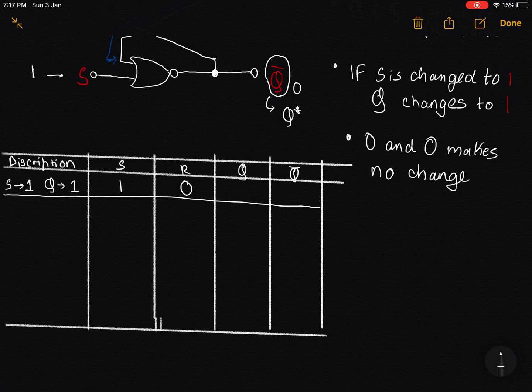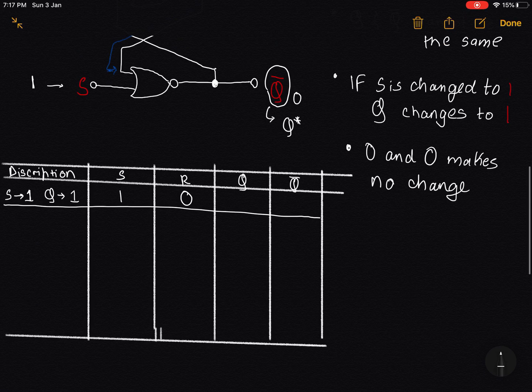S and R in SR flip-flops, they cannot be the same. They cannot be 1 and 1. They can be 0 and 0, but they cannot be 1 and 1. So in this case, Q will turn to 1. You are setting the value of Q to 1 by inputting 1. So that is why Q becomes 1 and Q complement becomes 0.